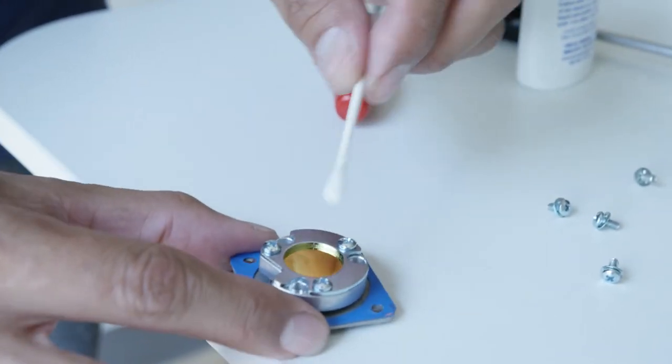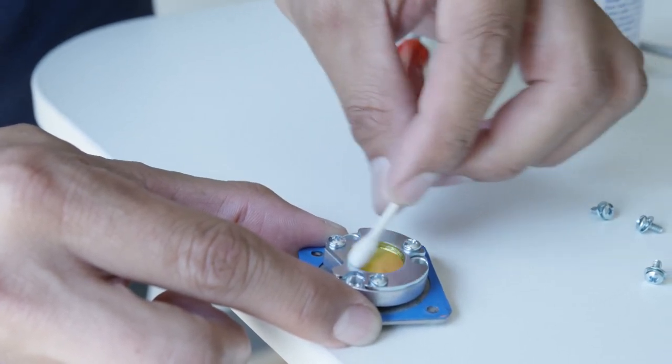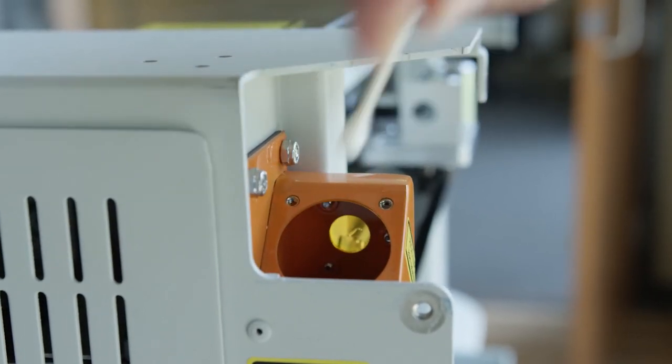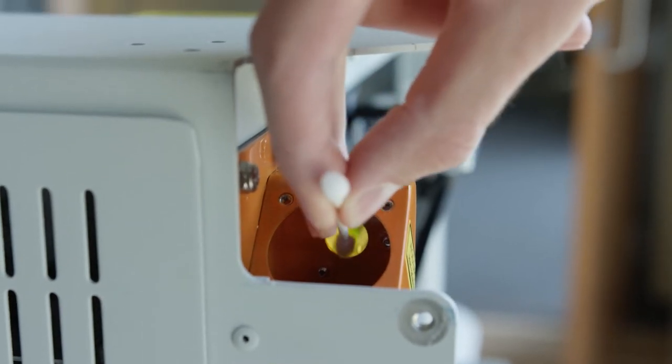Clean the mirror with the cleaning fluid cotton swab. While the inside of the periscope housing is accessible, use the cleaning fluid cotton swab to clean the inside of the window at the top of the housing.